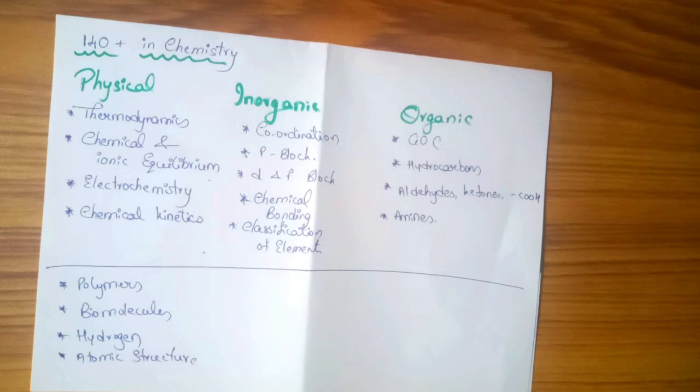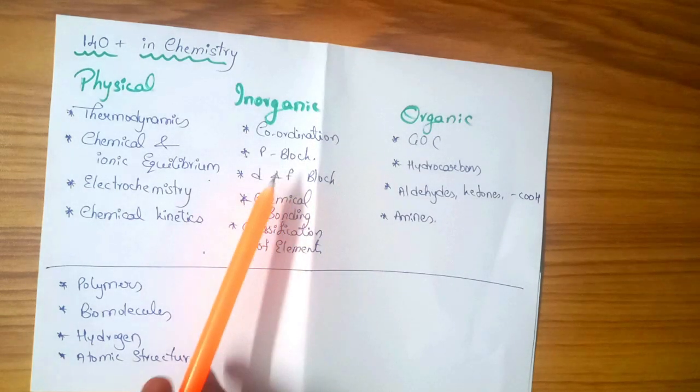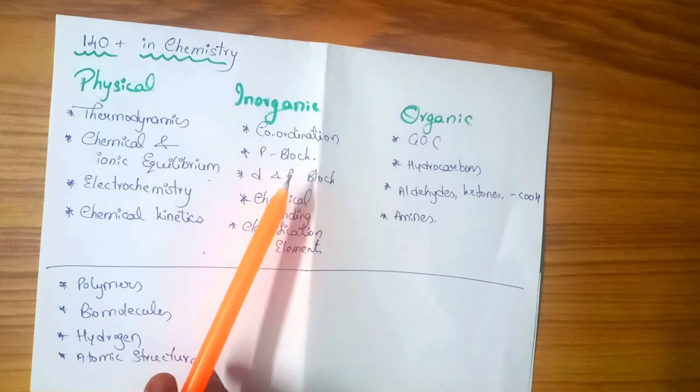It is groups 13 to 18 elements. In NCERT, there are many pages. However, if you have a shortcut, within 3 to 4 pages, we can complete the P-Block. What you have to know is the basic concepts.